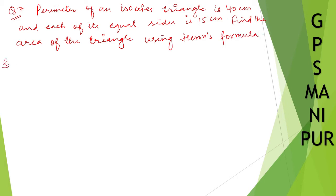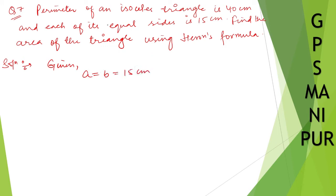Solution. So perimeter of an isosceles triangle is 40 centimeters and each of its sides is equal to 15 centimeters. Find the area of the triangle using Heron's formula. Now we know that it is an isosceles triangle. Given: isosceles triangle, and each of its equal sides is 15 centimeters.